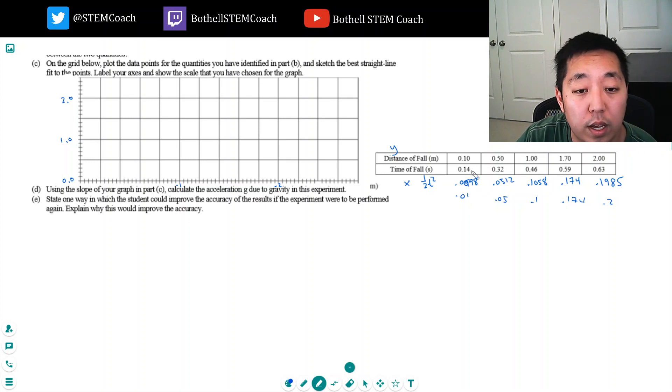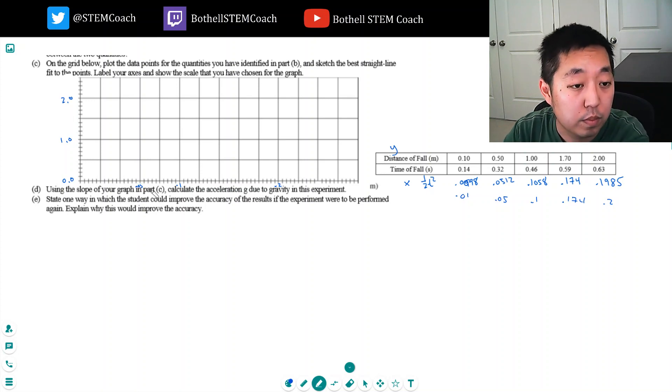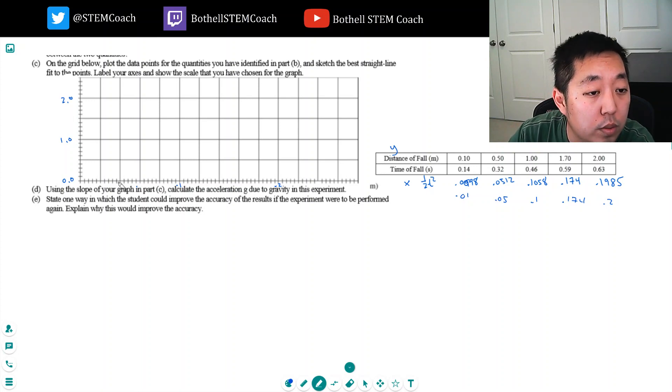So at x of 0.01, which would be one tenth of this. This is 0.1. This is 0.05. Each of these is like 0.02. So 0.0098 is like halfway here and it's about at 0.01, which would be about there.